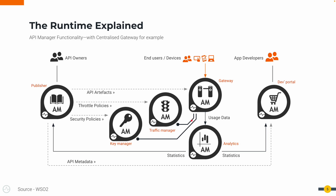Let's look at the functionality in detail and how these components talk to each other. API owners or API creators will use the Publisher Portal to onboard an API, and once the API is published, all the API artifacts get published to the Gateway, all the throttling policies get published to the Traffic Manager component, all the security policies get published to the Key Manager component, and at the same time API metadata will be published to the Developer Portal so that application developers can access the API. Once the API is published, let's look at it from the app developer's perspective.